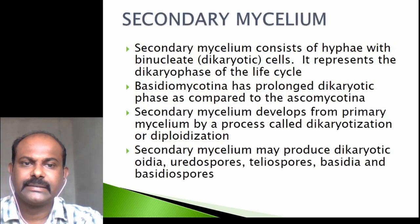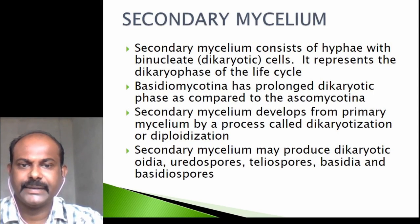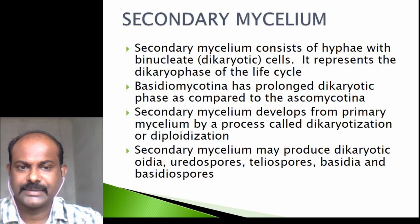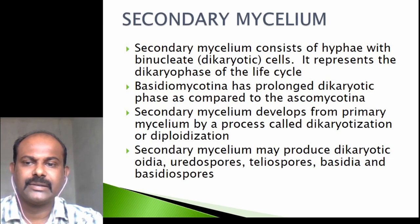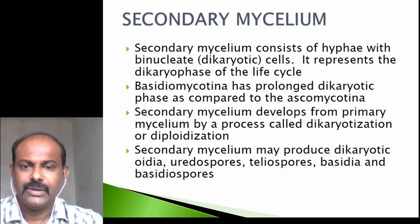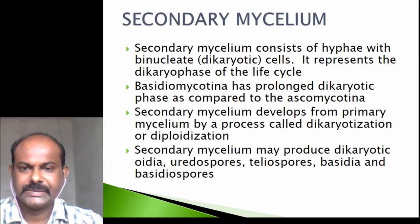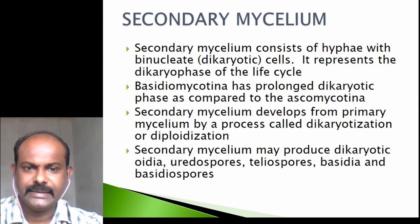The secondary mycelium consists of hyphae with binucleate cells and represents the dikaryophase of the life cycle. Basidiomycotina has a prolonged dikaryotic phase compared to ascomycetes. Secondary mycelium develops from primary mycelium by a process called dikaryotization or diploidization. Secondary mycelium may produce dikaryotic oidia, uredospores, teliospores, basidia, and basidiospores, depending upon the genus.